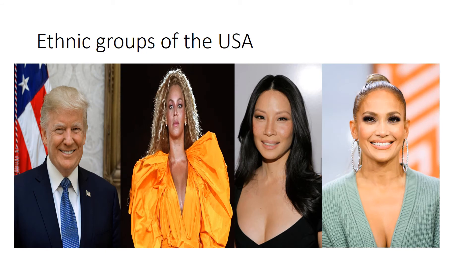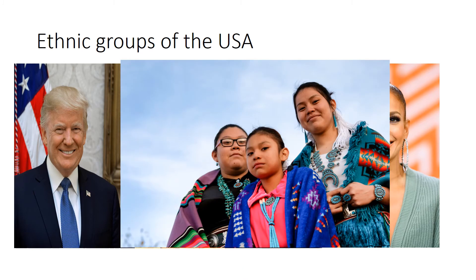Now ethnic groups in the USA. Because of the USA's past history, it has a lot of different ethnic groups. For example, Donald Trump represents the white ethnic group; Beyoncé Knowles is an African American; there's a famous Asian actress representing Asian Americans; and Jennifer Lopez would be known as Hispanic. So the USA has a mixture of different ethnic groups — more than just these four. It also has Native Americans, who have been in America the longest but are now the smallest ethnic group in the USA.